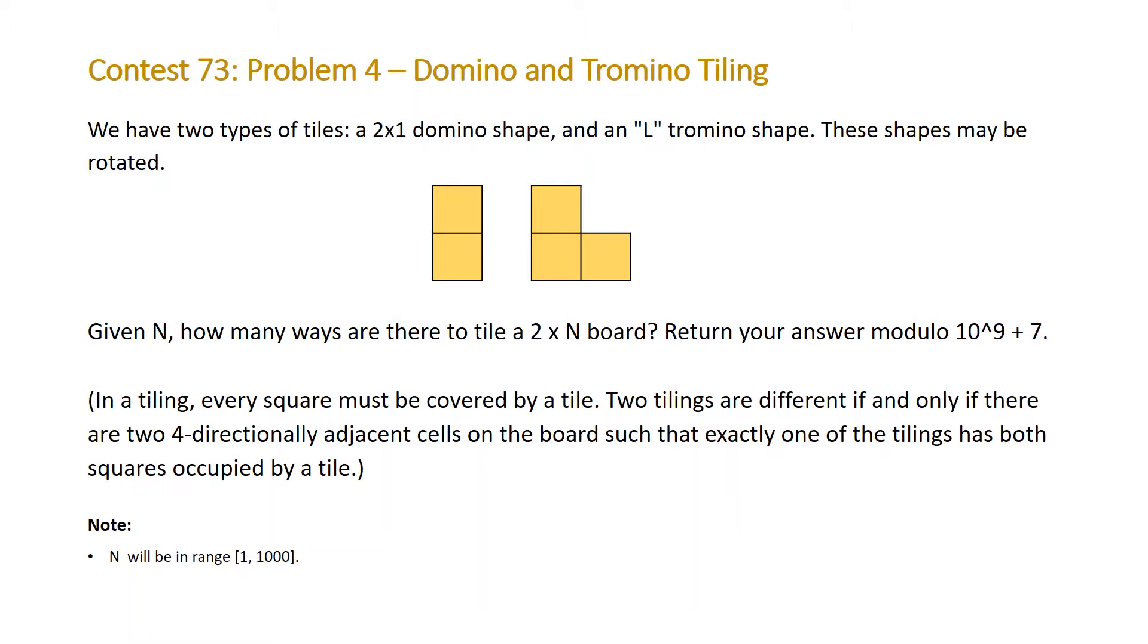Note that in a tiling every square must be covered by a tile. Two tilings are different if and only if there are two four-directionally adjacent cells on the board such that exactly one of the tilings has both squares occupied by a tile.